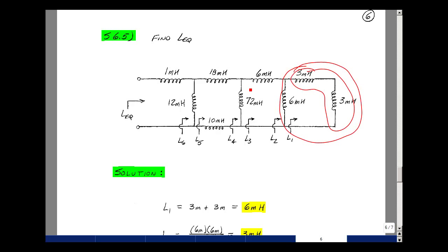That's in series with 6, so 6 mH plus 3 mH would be 9 mH. That's in parallel with 72, so the product over the sum would be 72 mH times 9 mH over 72 mH plus 9 mH, and that turns out to be 8 mH.